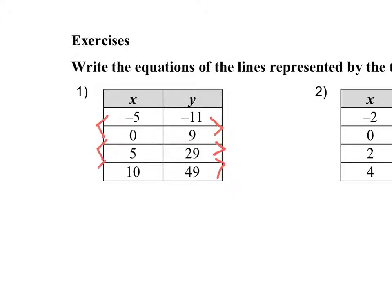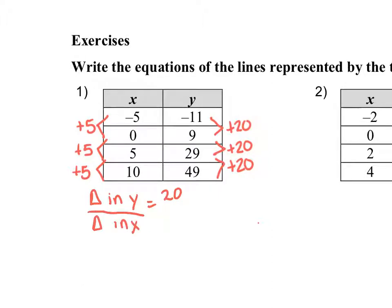The rate of change from negative 11 to 9 is positive 20. 9 to 29 is positive 20, plus 20. 29 to 49 is plus 20. Our change from negative 5 to 0 is plus 5, 0 to 5 is plus 5, and then 5 to 10 is plus 5. So we're going to have our change in y, which is 20, over our change in x, which is 5.